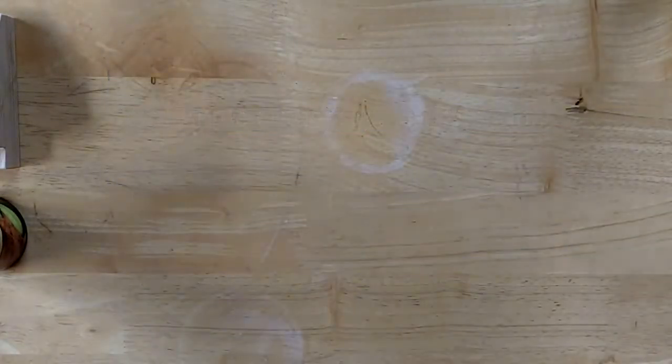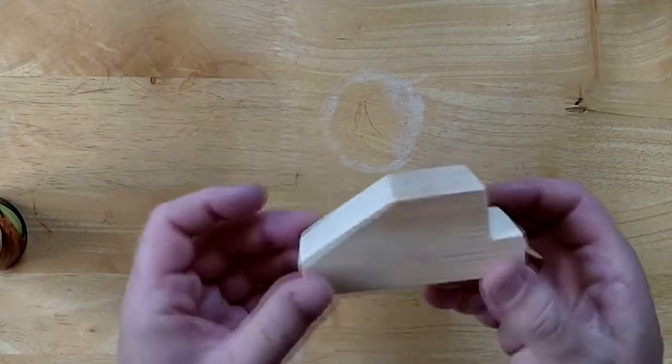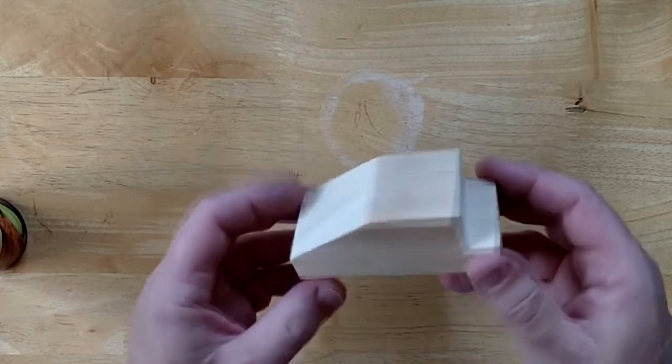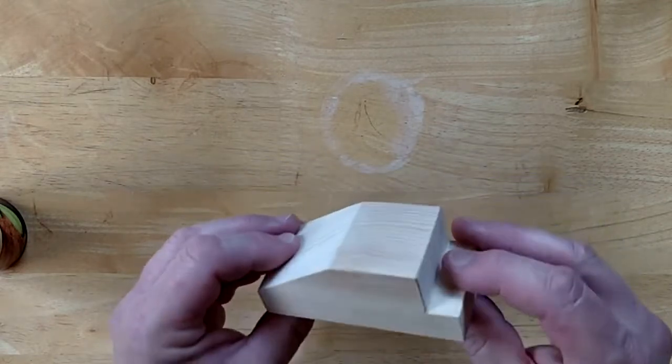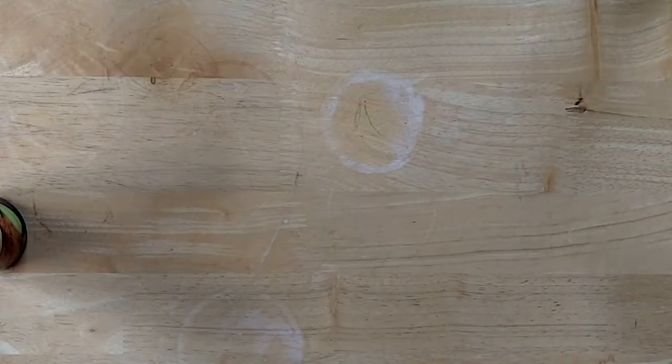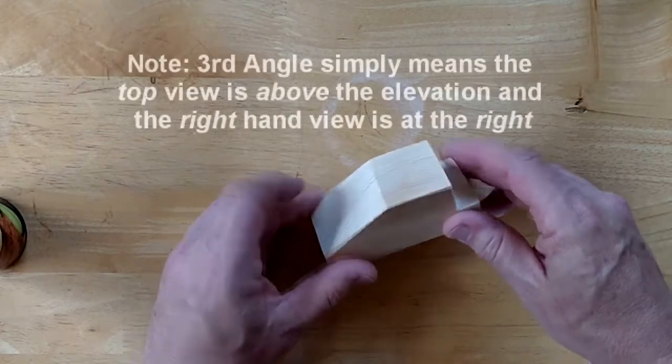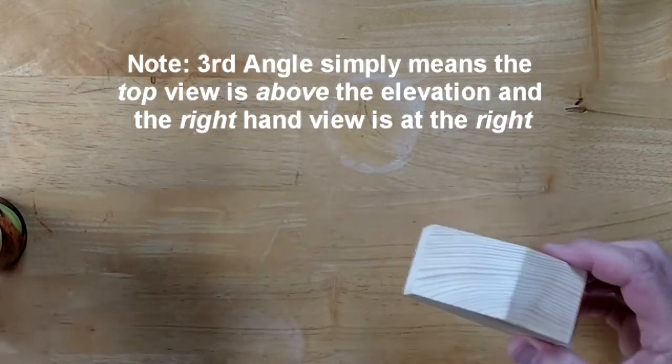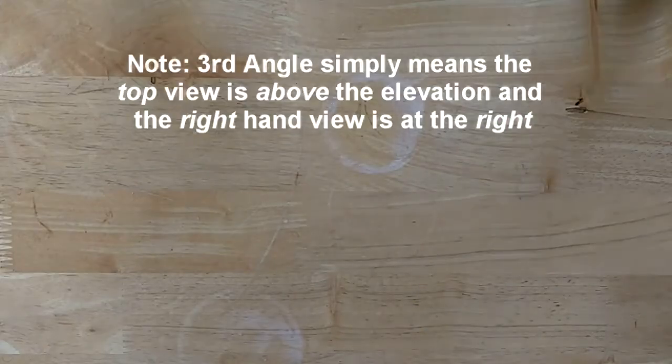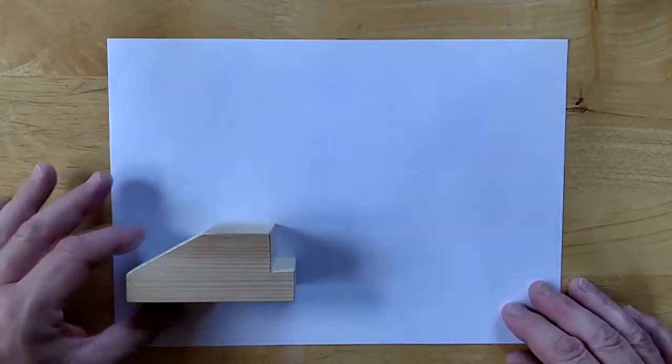Now the object we're going to draw is this wooden block. It's a slightly interesting shape so it's worth representing with several views. If it was just a box it would be boring. We're going to draw it at full size on a piece of A4 paper. If we were in school we would probably use drawing boards and parallel motions and set squares, but you don't have that at home. So I'm going to show you how to construct a third angle orthographic projection of this object just using a ruler and a pencil.